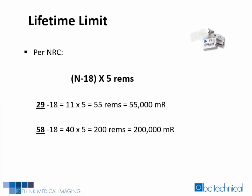What is the lifetime radiation limit you are allowed to receive? The NRC guideline is as follows: N minus 18 times 5 REMs. In this example, the letter N stands for age. Therefore, the calculation for a 29-year-old would be 29 minus 18 equals 11, times 5 equals 55 REMs, which equals 55,000 millirems. If you were 58, the calculation would be 58 minus 18, which equals 40, times 5 equals 200 REMs, which equals 200,000 millirems.